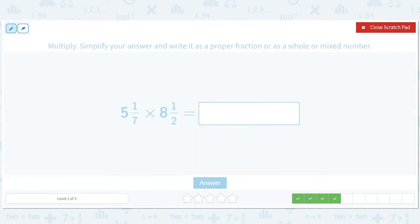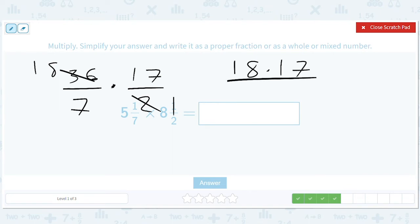Five and a seventh times eight and a half. So we have thirty-six over seven times seventeen over two. And so we can simplify this as eighteen and one. So we get eighteen times seventeen over seven.